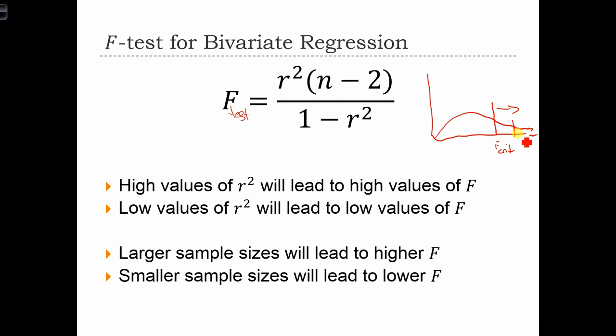So what's going to increase the value of F test? Well, first of all, we see that if r squared is higher, then our F test will be higher. Because here, r squared on the numerator, if r squared goes up, the numerator goes up. And if r squared goes up, our denominator goes down. So if r squared goes up, we have an increase in the numerator and a decrease in the denominator. That's going to cause F to increase.